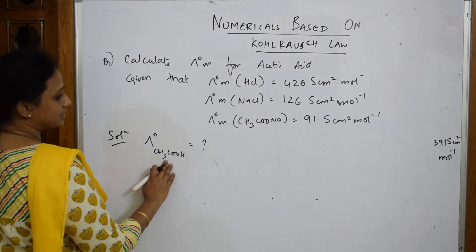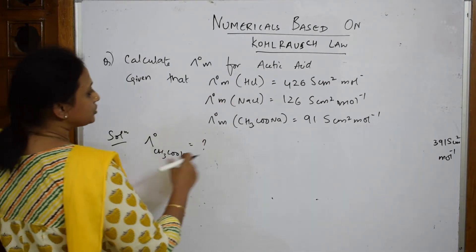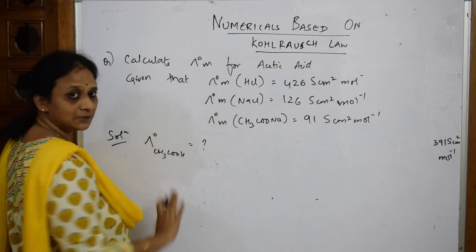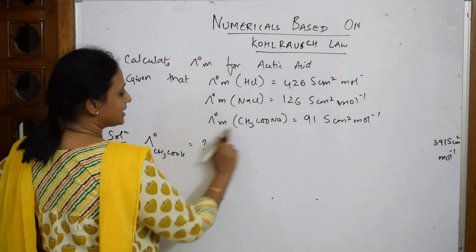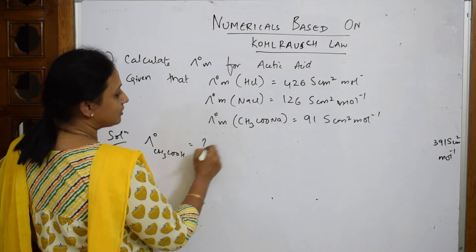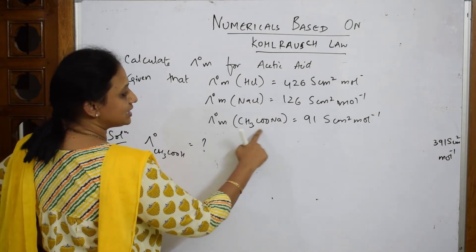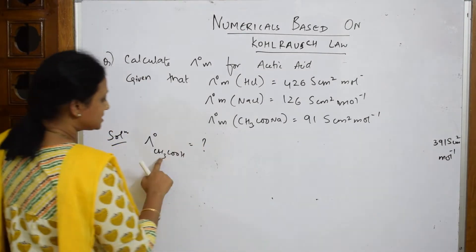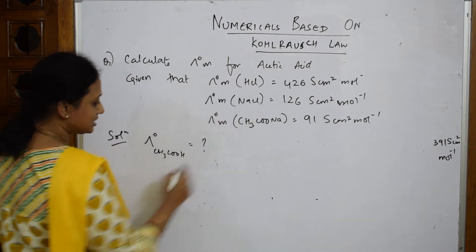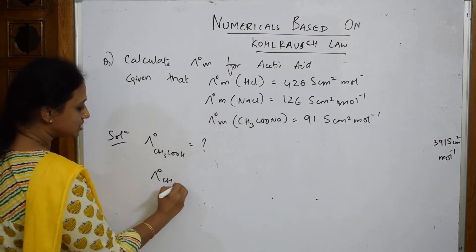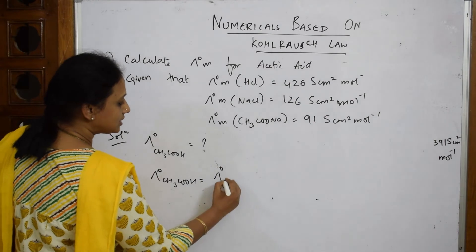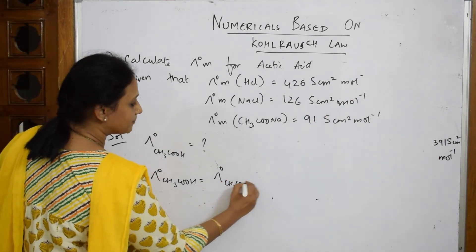Now whenever you have to find out acetic acid, just see they've already given. What should you do? There are three quantities in this. The first quantity, I require this quantity. Why do I require this quantity? Because in this acetate ion is present. In this acetic acid, acetate ion is already present. So pick that up. CH3COOH. First picked out acetate CH3COONa.